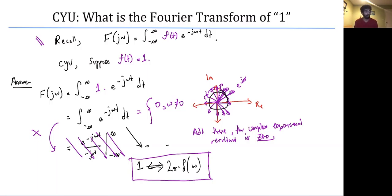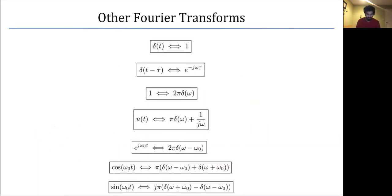This was a deceptively simple but actually quite difficult question. You cannot just evaluate the integral directly — you have to visualize what the integral is telling you. Any complex exponential e to the j omega t, sweeping across all time points, rotates infinitely many times around a circle, and the addition of all these is zero. Energy only exists in the trivial case where omega equals zero.